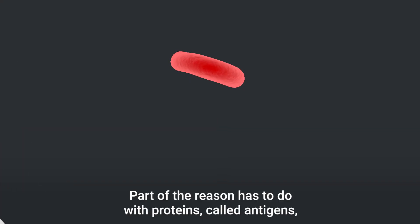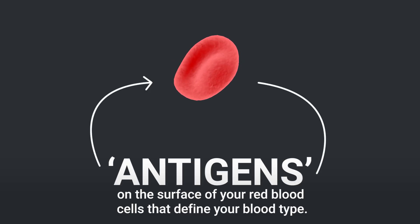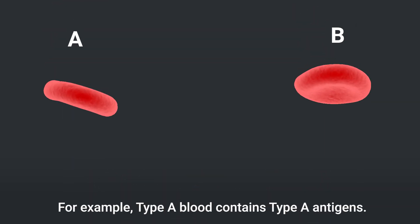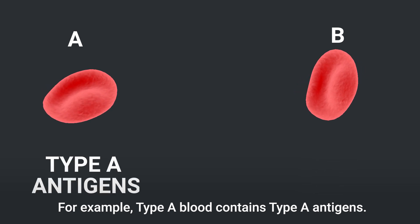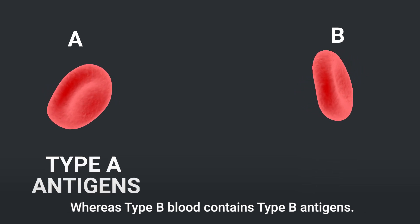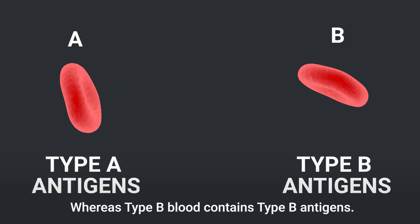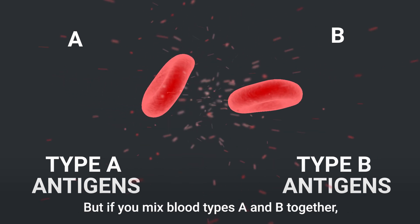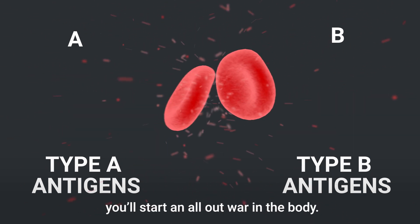Part of the reason has to do with proteins called antigens on the surface of your red blood cells that define your blood type. For example, type A blood contains type A antigens, whereas type B blood contains type B antigens. But if you mix blood types A and B together, you'll start an all-out war in the body.